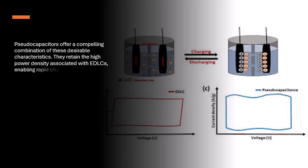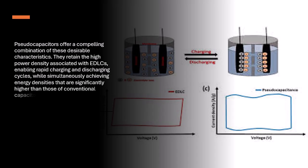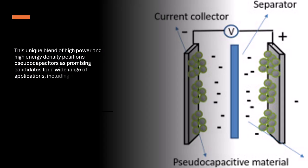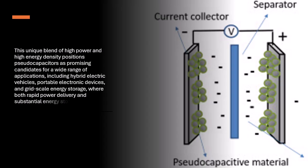They retain the high power density associated with EDLCs, enabling rapid charging and discharging cycles, while simultaneously achieving energy densities that are significantly higher than those of conventional capacitors, approaching the realm of battery performance. This unique blend of high power and high energy density positions pseudo-capacitors as promising candidates for a wide range of applications, including hybrid electric vehicles, portable electronic devices, and grid-scale energy storage, where both rapid power delivery and substantial energy storage are crucial.